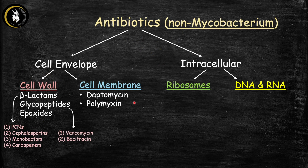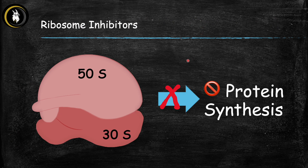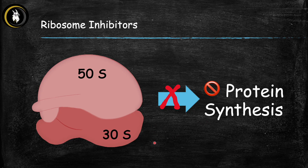Now let's go inside the bacteria and look at ribosome inhibitors. We can target bacterial ribosomes because they differ from ours: eukaryotic ribosomes have 60S and 40S subunits, while bacterial ribosomes have 50S and 30S subunits. Since their ribosomes are different, they make a good antibiotic target. We have two classes of drugs here — those targeting the 30S subunit and those targeting the 50S subunit.